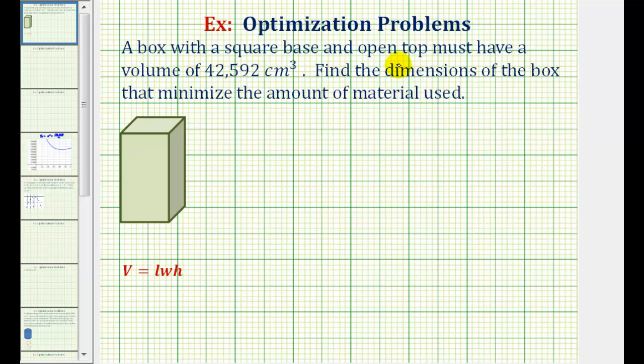A box with a square base and open top must have a volume of 42,592 cubic centimeters. We want to find the dimensions of the box that will minimize the amount of material used, which means we want to minimize the surface area of the box.